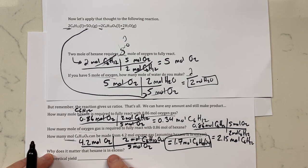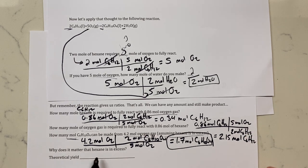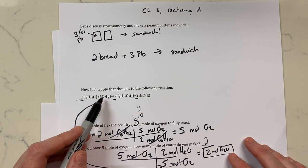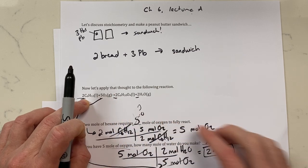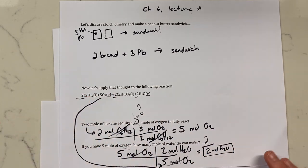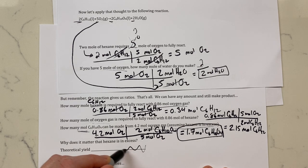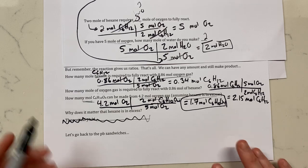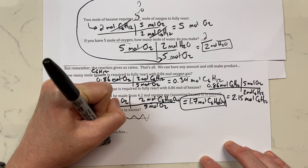So why does it matter that hexane is in excess? It matters because if we had none of the C6H12 it wouldn't matter how much O2 we have — we can't do anything. Let's go back to peanut butter sandwiches. We have two bread plus three tablespoons of peanut butter making one delicious sandwich.